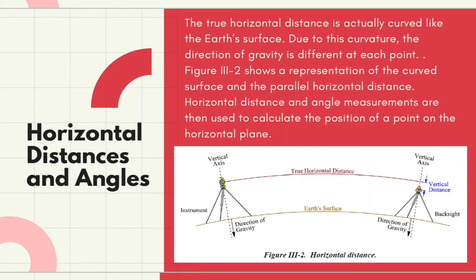Horizontal distances and angles: A linear measurement on the horizontal plane determines the horizontal distance between two points. However, the true horizontal distance is actually curved like the Earth's surface. As seen in Figure 3-2, due to this curvature, the direction of gravity is different at each point. Subsequently, vertical axes are not parallel to each other. The figure shows a representation of the curved surface and the parallel horizontal distance.